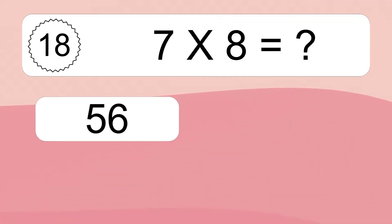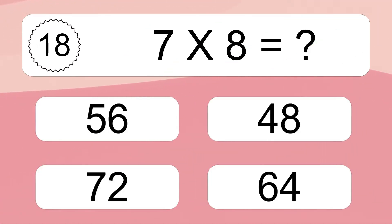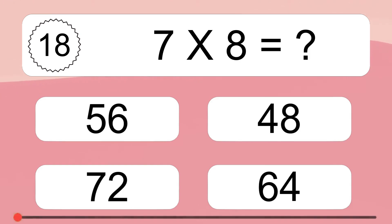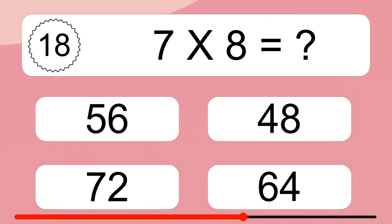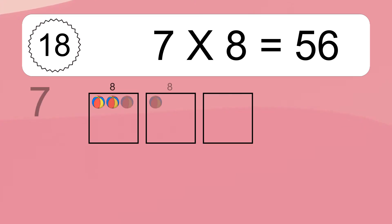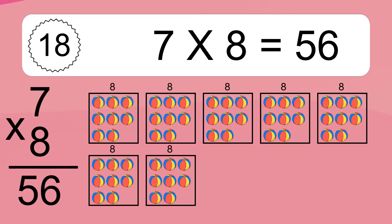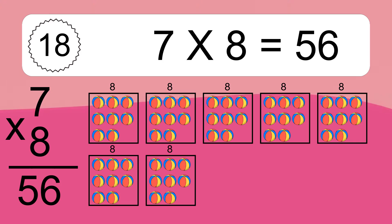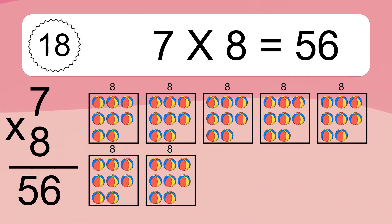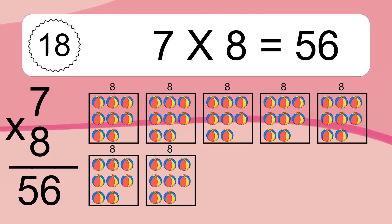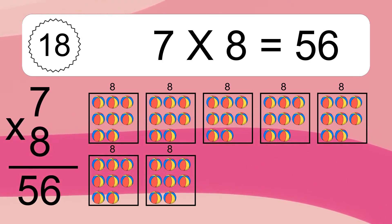Seven times eight equals what? Seven times eight equals 56. We have seven boxes, and each box has eight colorful balls inside. If you count all the balls in all the boxes together, you will have seven times eight balls. This equals 56 balls.